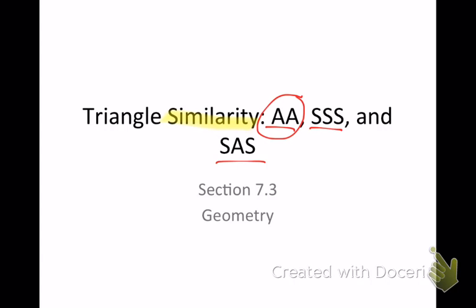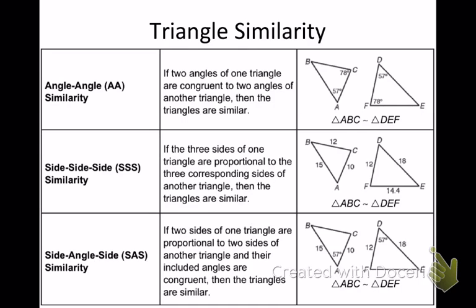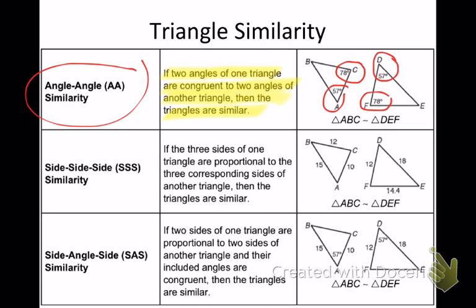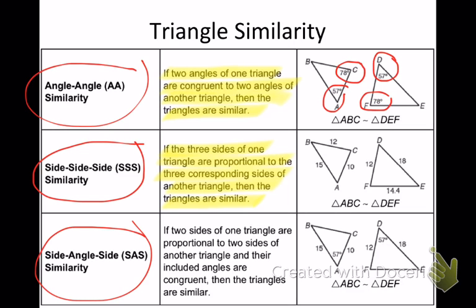So what we're talking about here, angles would be the same, sides would be proportional. Here are the triangle similarity statements. Angle-angle states that if two angles of one triangle are congruent to two angles of another triangle, then the triangles are similar. So if you notice here, D is the same as A, F is the same as C, the two triangles are similar. Same with side, side, side. If the three sides of one triangle are proportional to three corresponding sides of another triangle, then the triangles are similar. And the last one, side, angle, side. If two sides of one triangle are proportional to two sides of another triangle, and their included angles are congruent, then the triangles are similar.